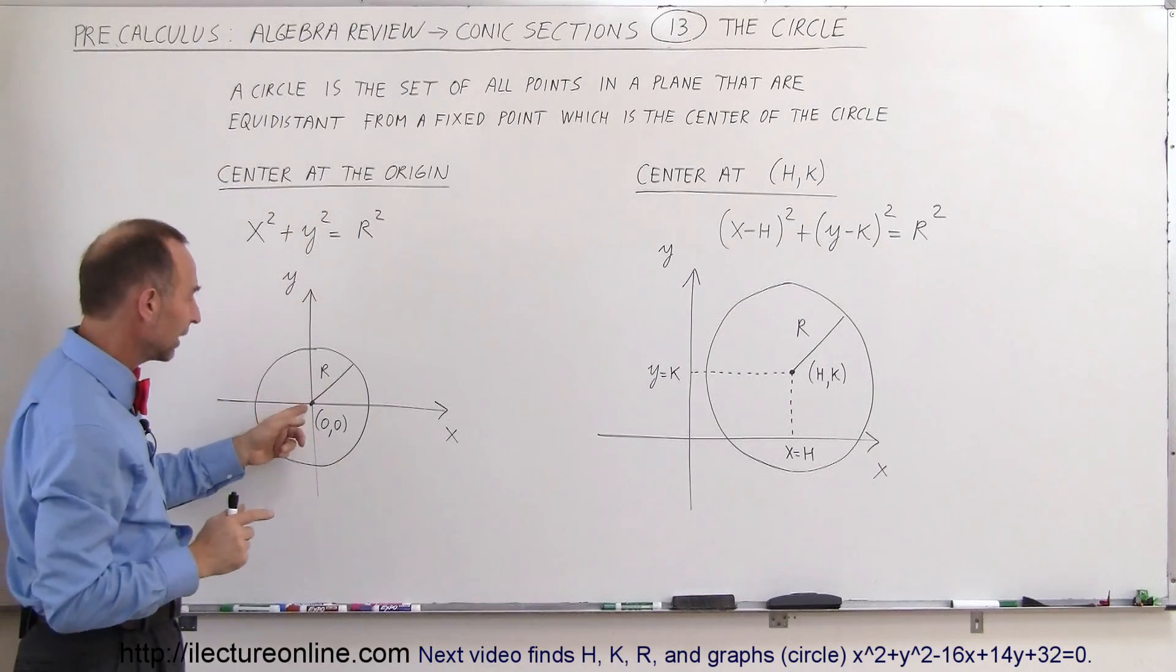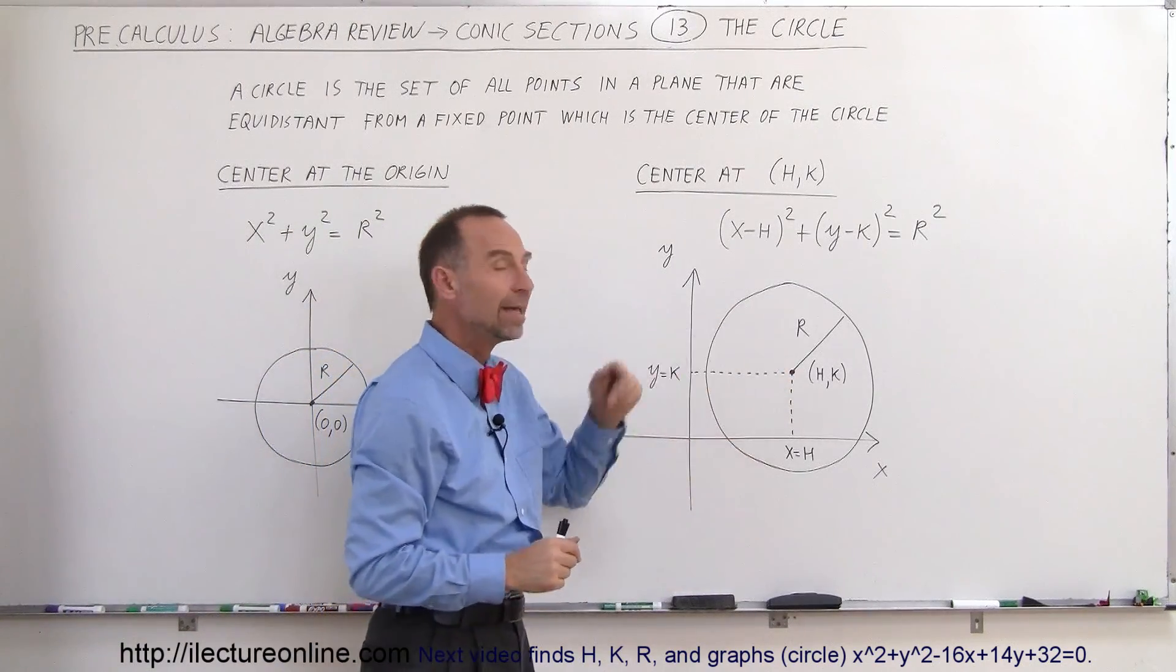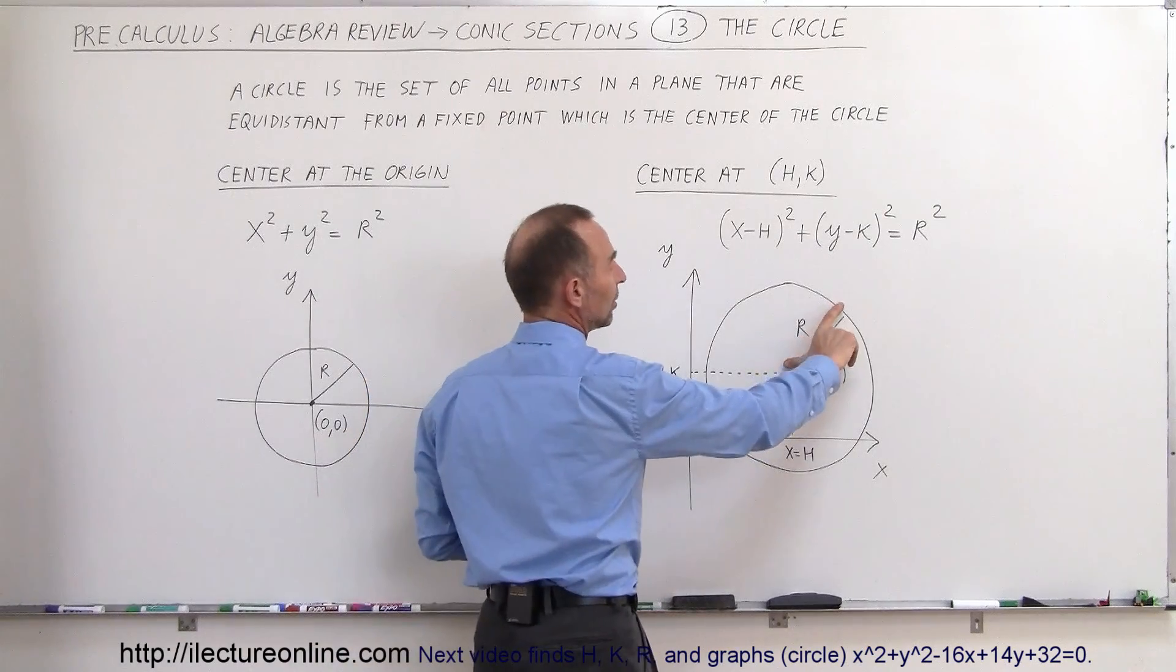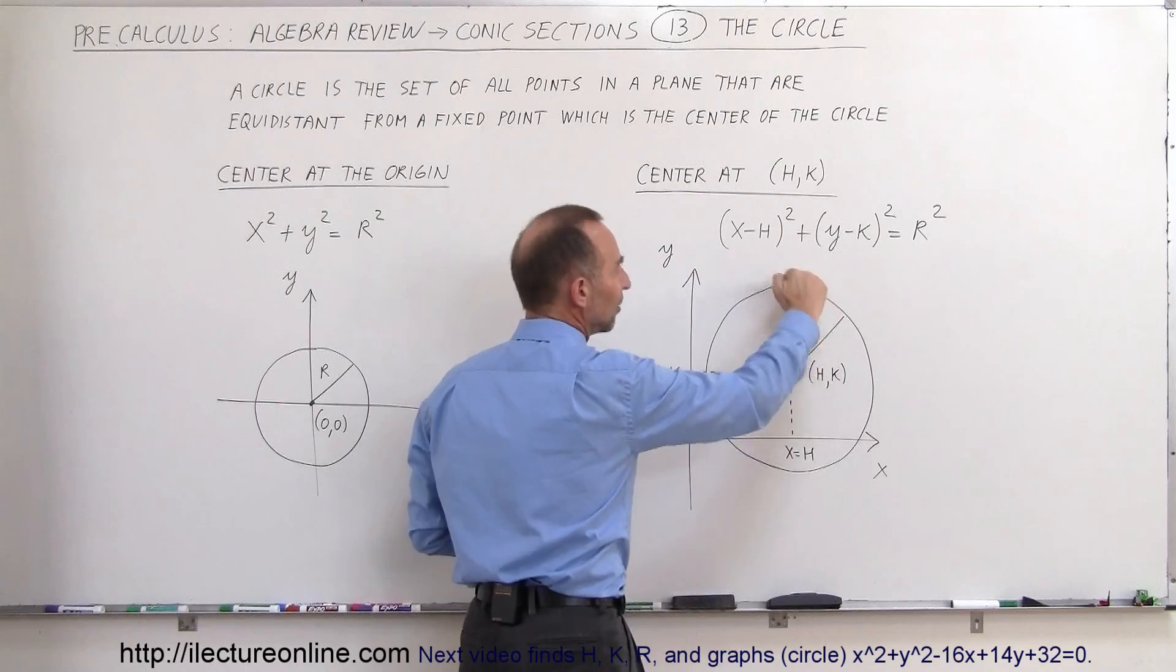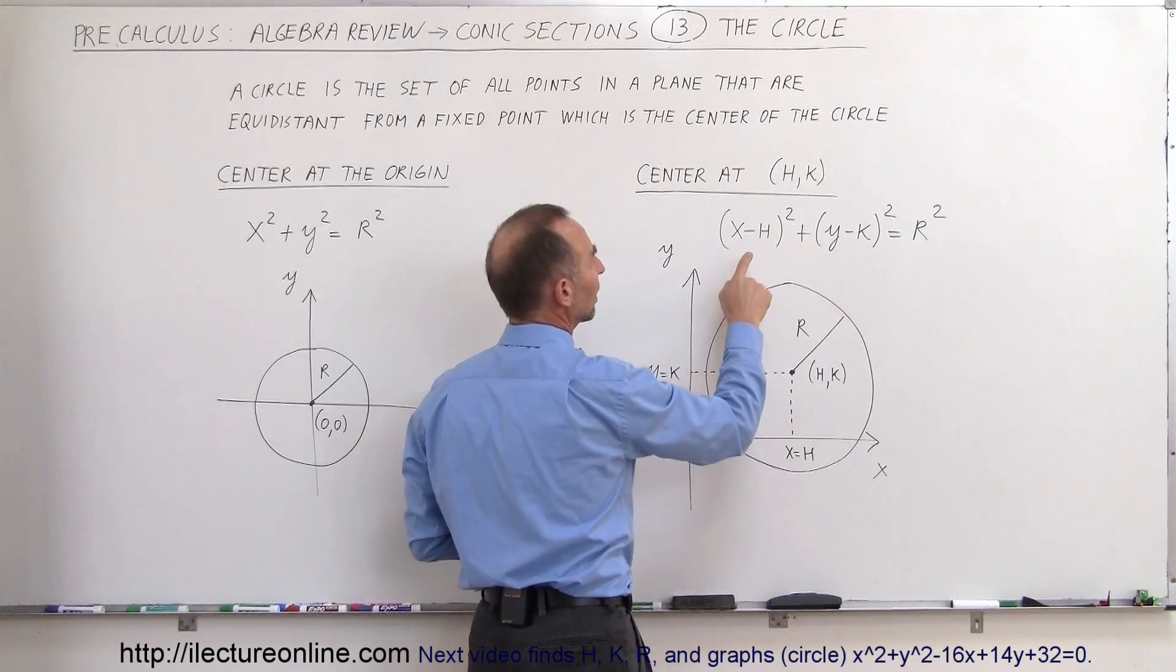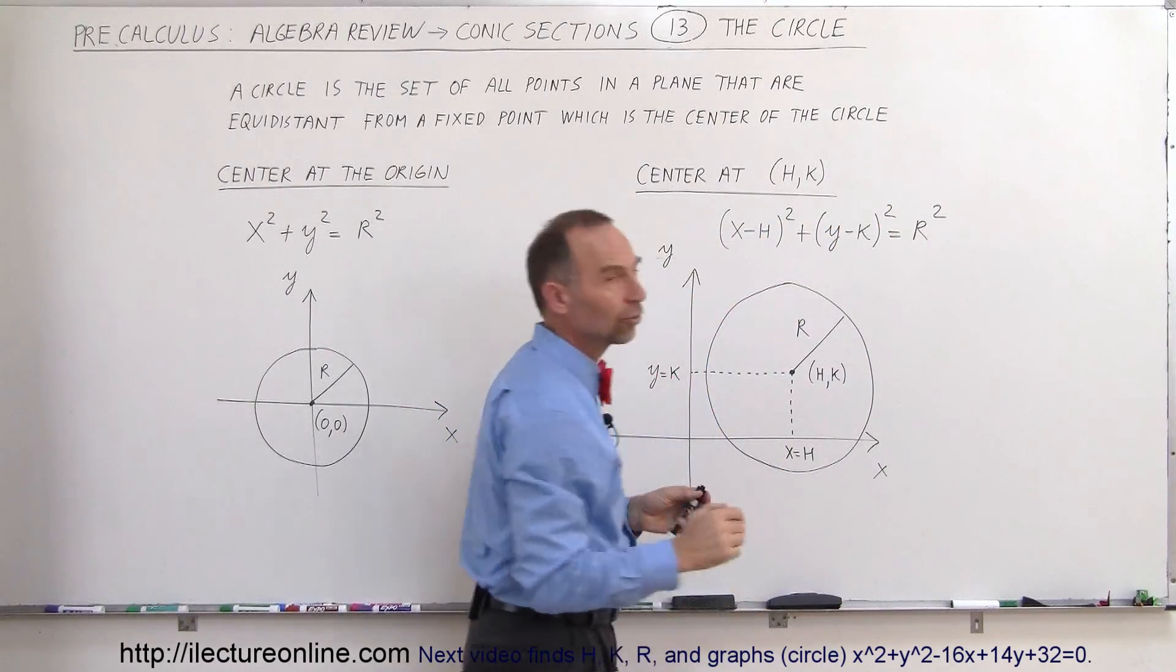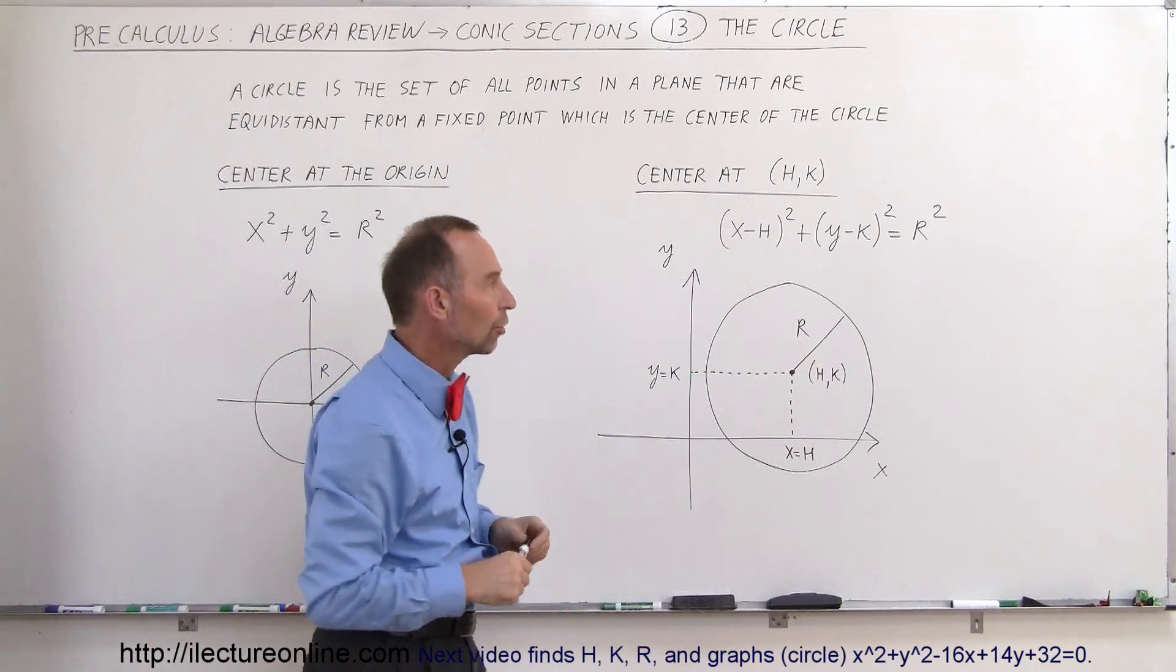But if the center of the circle is not at the origin, but at some other location, let's say h, k, h would be the x-coordinate of that center, and k would be the y-coordinate of the center. Again, since every point is equidistant away from that center point right there, or every point on the circle is equidistant away from the center of the circle, we can now write x minus h quantity squared plus y minus k quantity squared equals r squared. So that's the same equation as over here, except where the center of the circle is not at the origin.